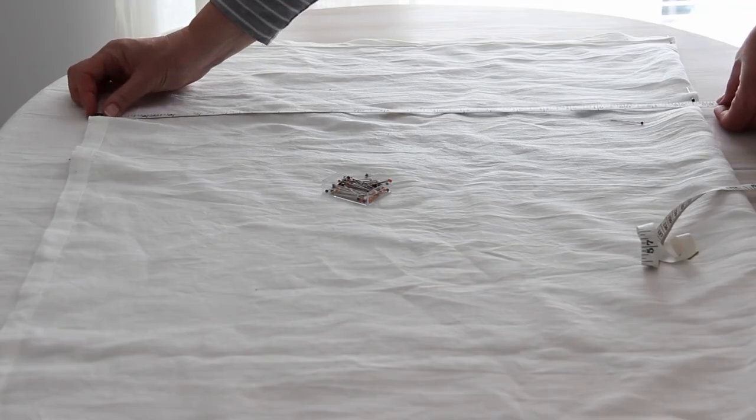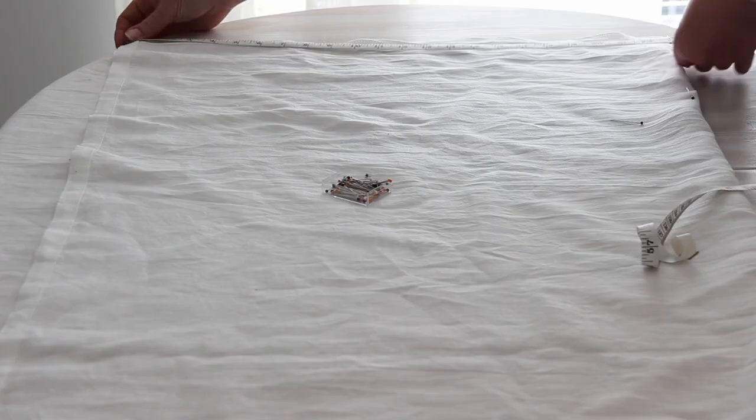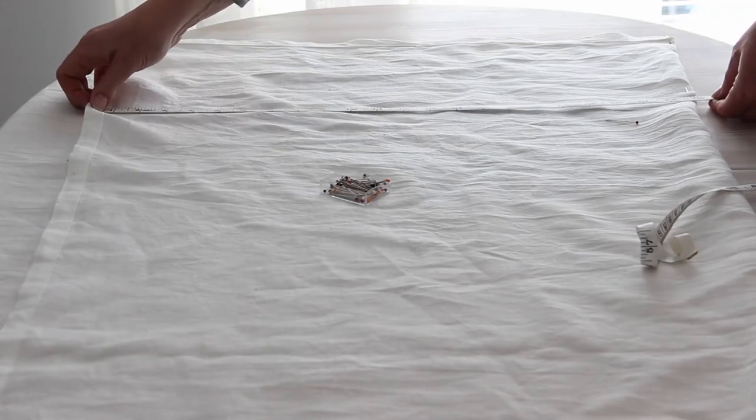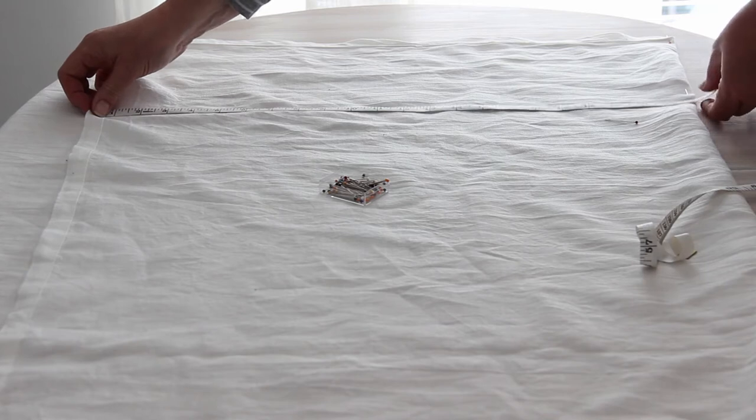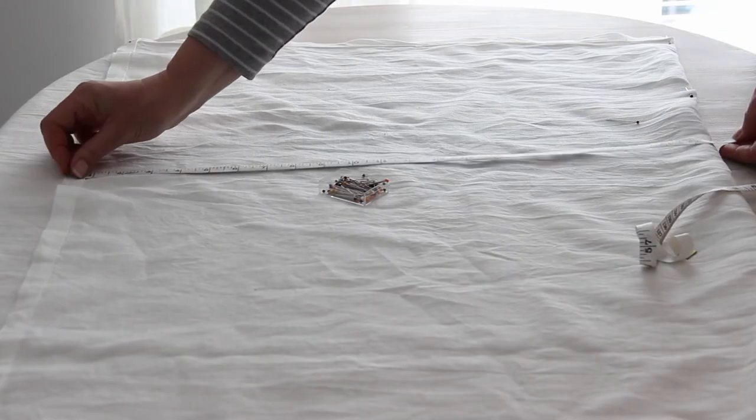Then fold up the bottom edge of your curtain to the line that you just drew and pin that along the line. The reason why we're not going to cut just yet and why we're pinning this up instead is that we want to be absolutely certain that these curtains are the right length before we cut.